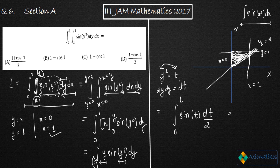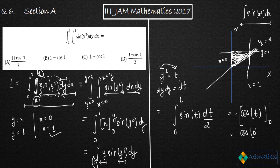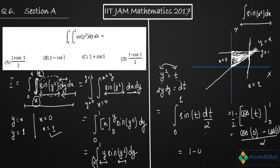We know the integration of sine. The integral of sine of t is minus cos of t. Applying limits from 0 to 1 and the factor of one-half, we get: one-half times (cos 0 minus cos 1). Since cos 0 equals 1, the final answer is (1 minus cos 1) over 2.